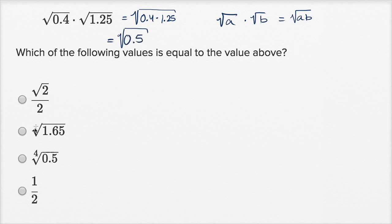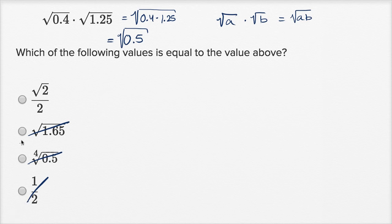If I look at the choices over here — this is the fourth root of 0.5, so that's not it. This is the square root of 1.65, so that's a different value. This is 0.5, not the square root of 0.5. This is just 1.5, but we want the square root of 1.5, so that's not it either. So this should be the same thing as the square root of 0.5.